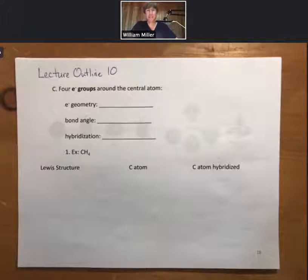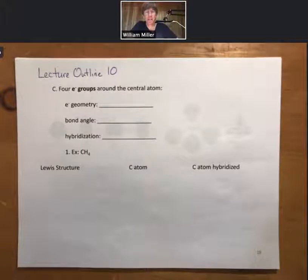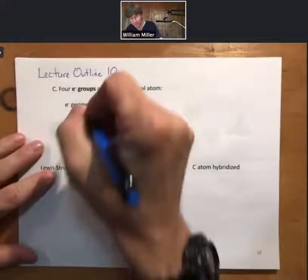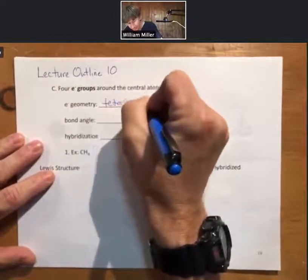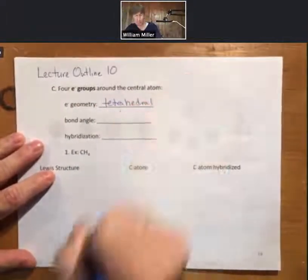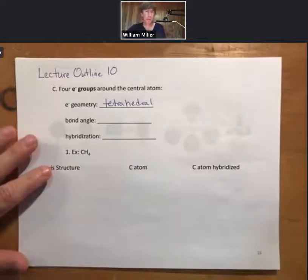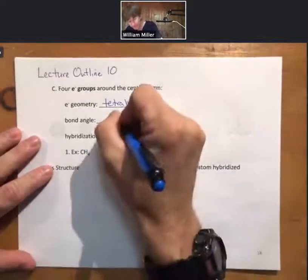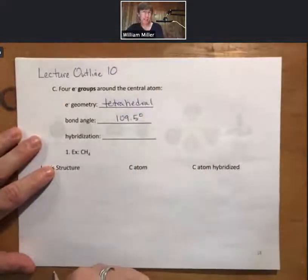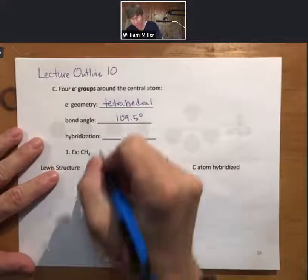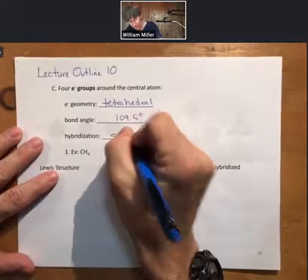Starting with page 18, we just did two and three electron groups. Now we're going to do four electron groups around the central atom. The electron geometry is going to be called tetrahedral. The bond angles will be 109.5 degrees, and the hybridization will be sp3.